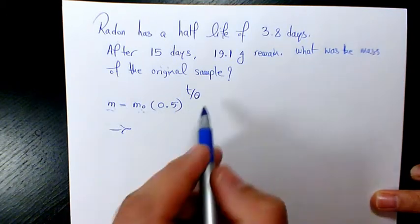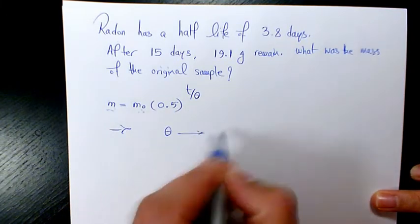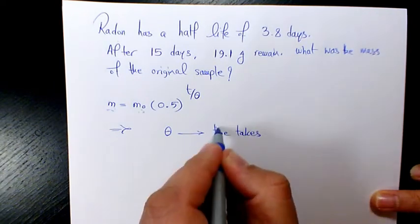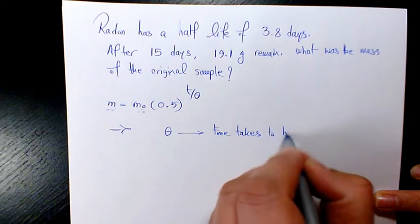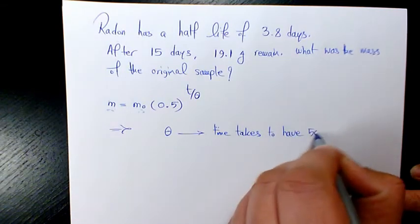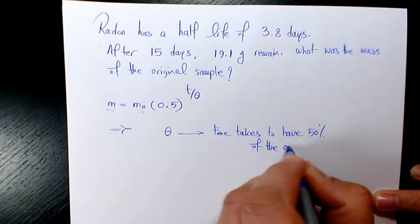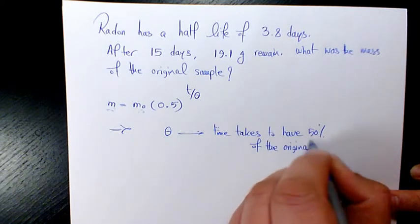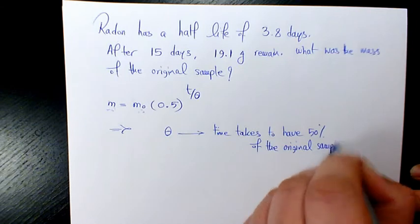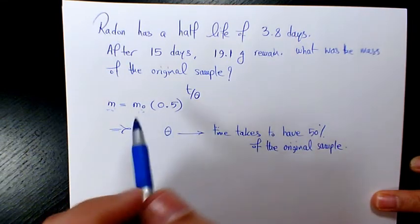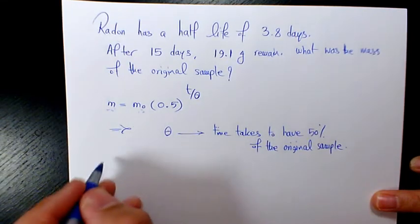Half-life means the time it takes to have 50 percent of the original sample. So basically we are dealing with decay samples, so 50 percent of it is going to be gone after one half-life time.